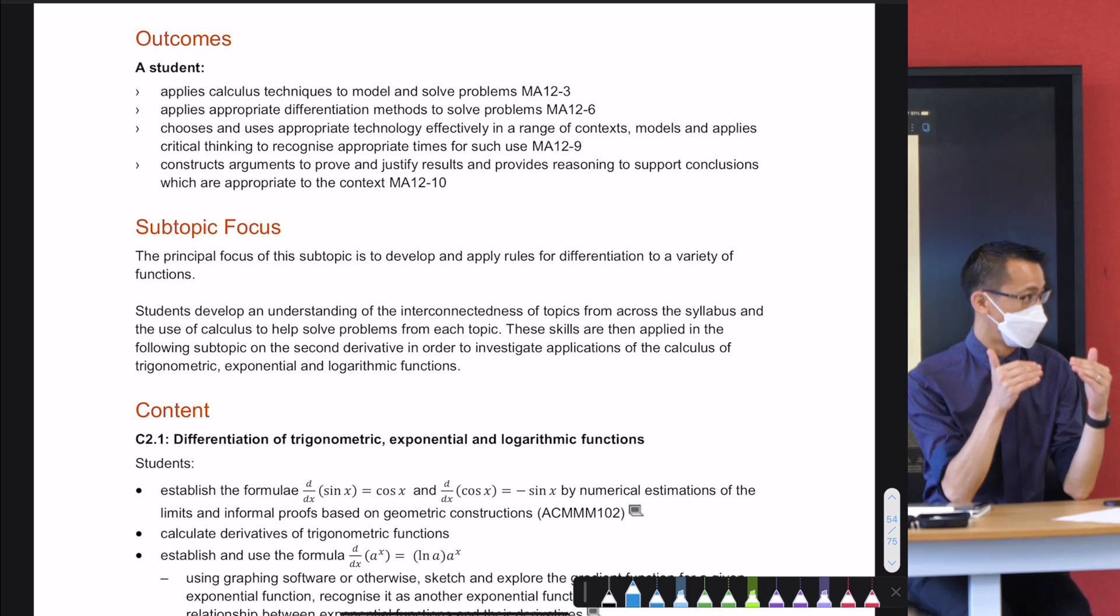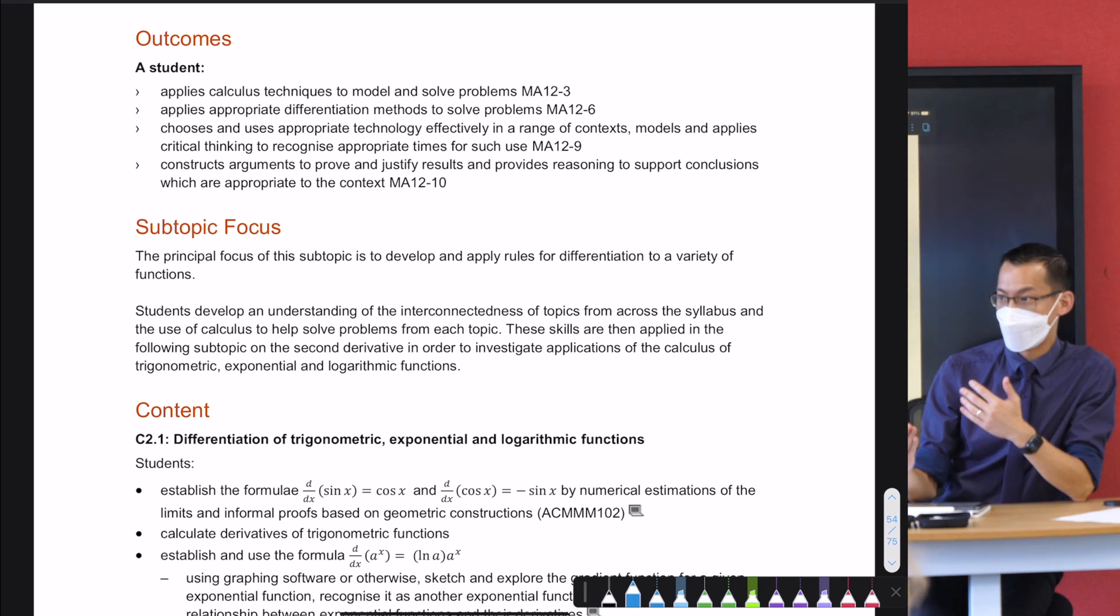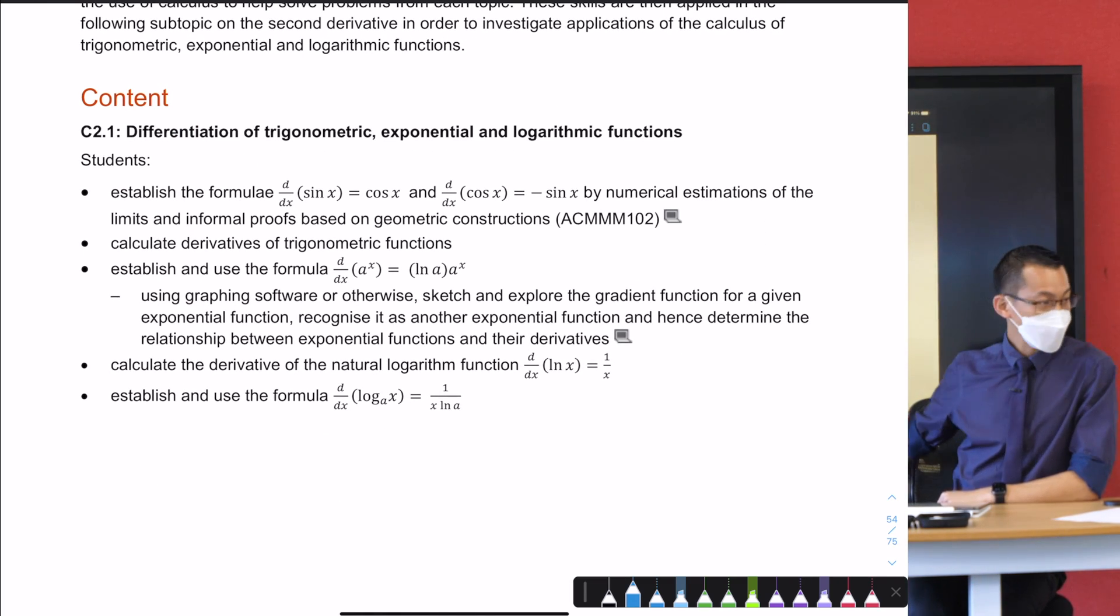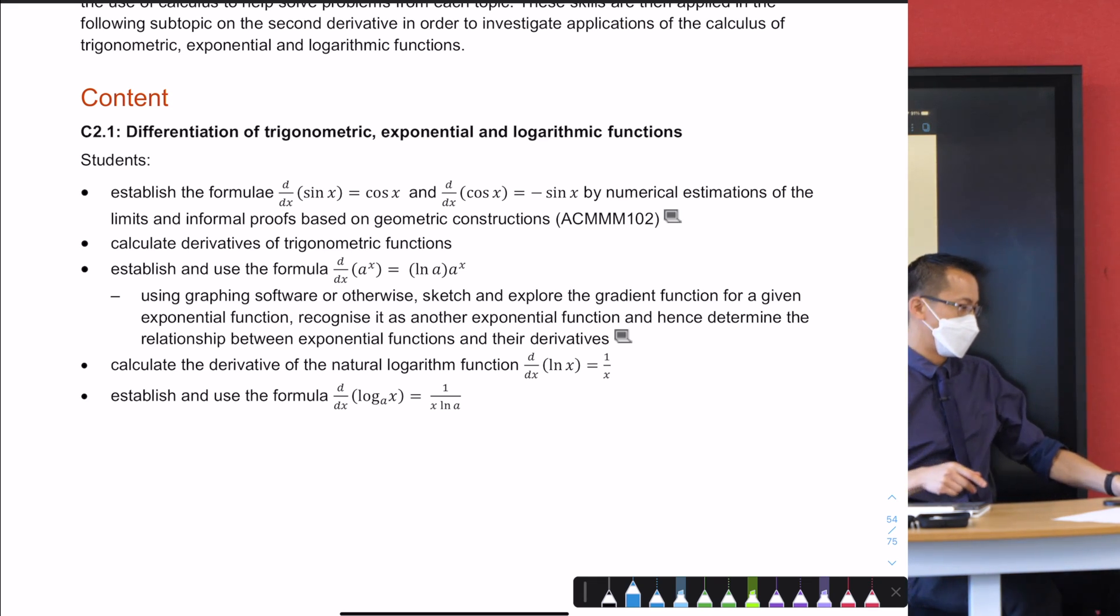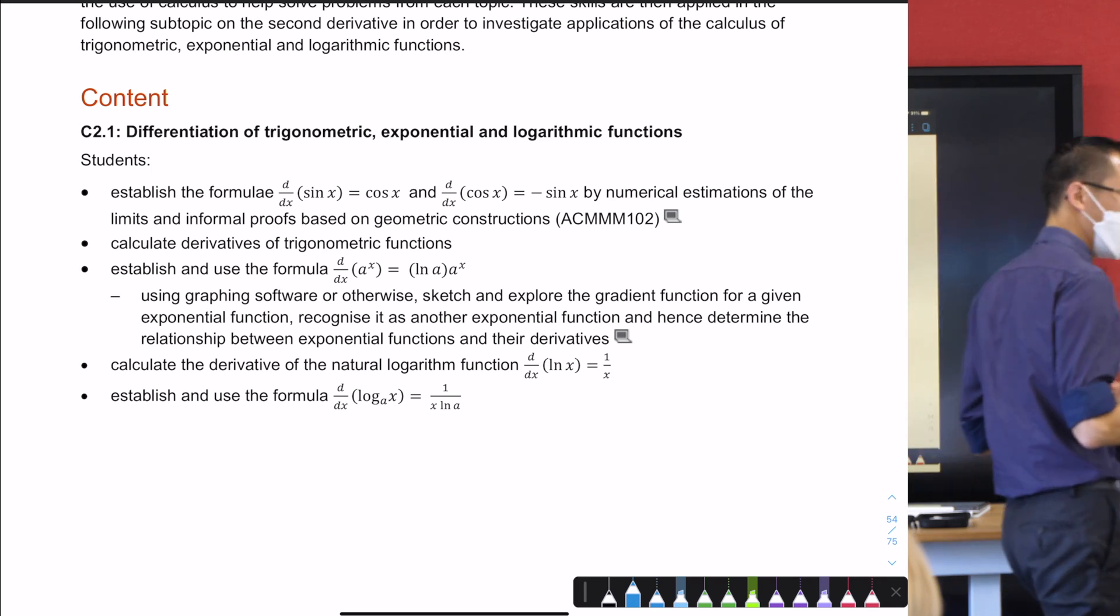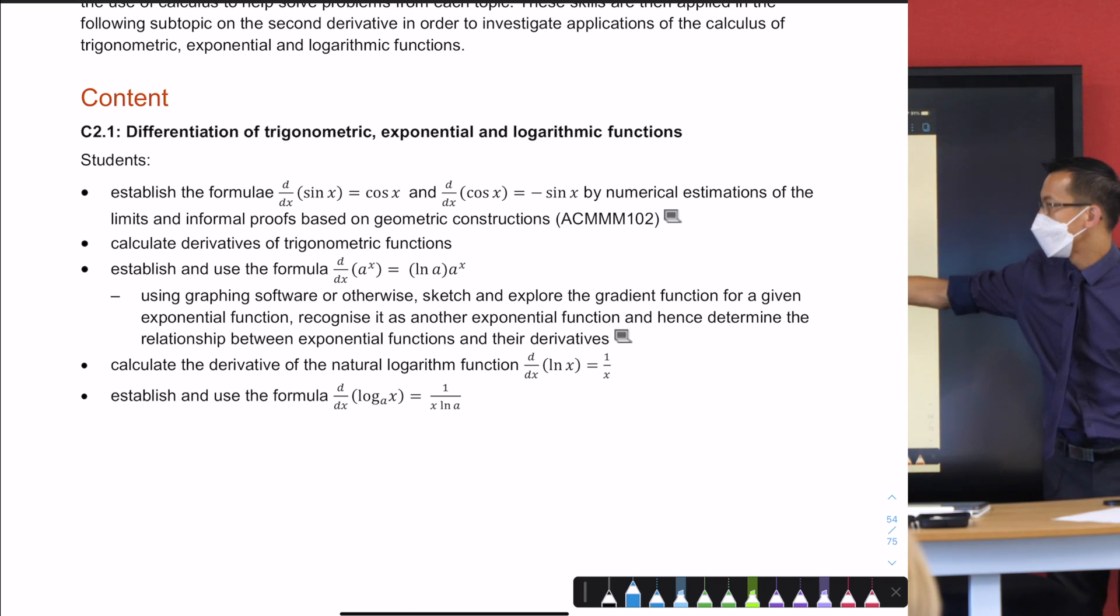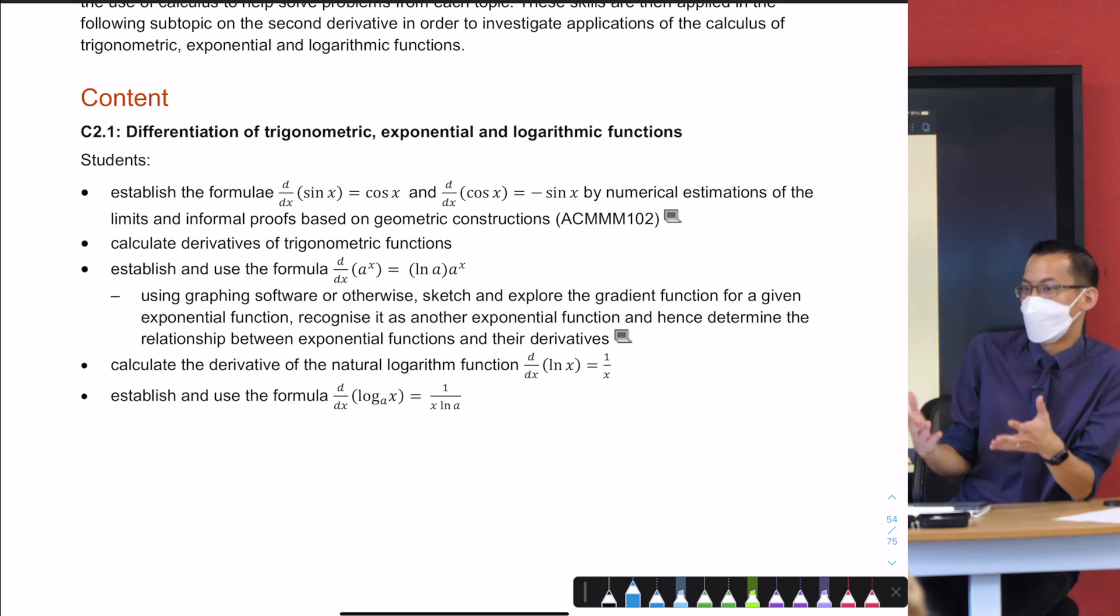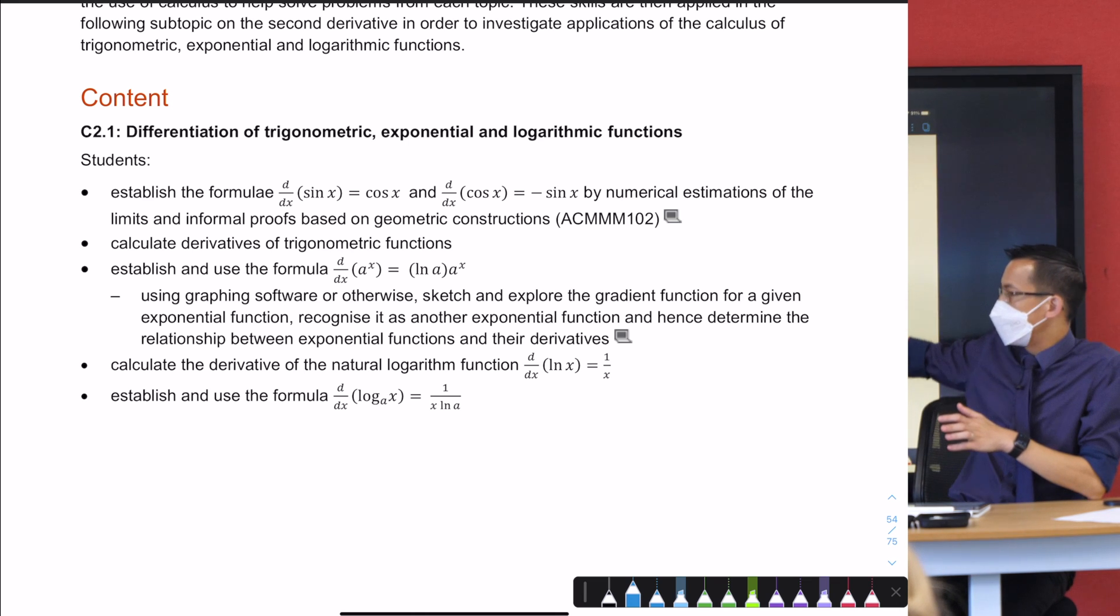And I should say as well, the mathematics syllabus is, I mean, I'm biased, but I think it's one of the most helpful ones in how detailed it is. I know when I work with other teachers they have a look at our syllabus. For example, I hope a lot of this rings a bell. When you have a look at it, you're like, oh, I forgot. C2.1, have a look at those dot points, right? In fact, if you look closely, some of them are literally exactly what we've done in class. Like that first one says, establish the formula that the derivative of sine is cos, and the derivative of cos is negative sine by numerical estimations of the limits and informal proofs based on geometric constructions.